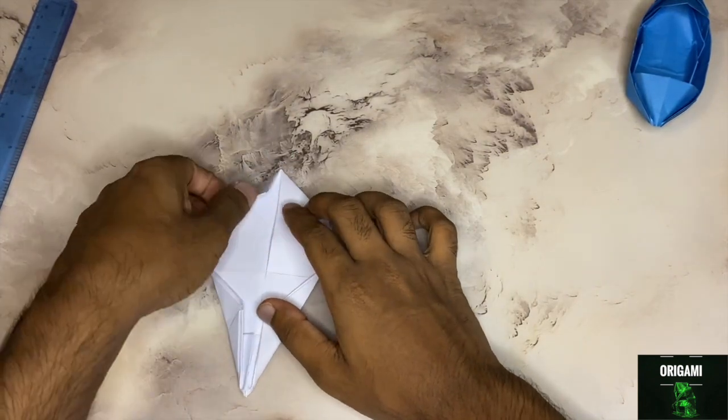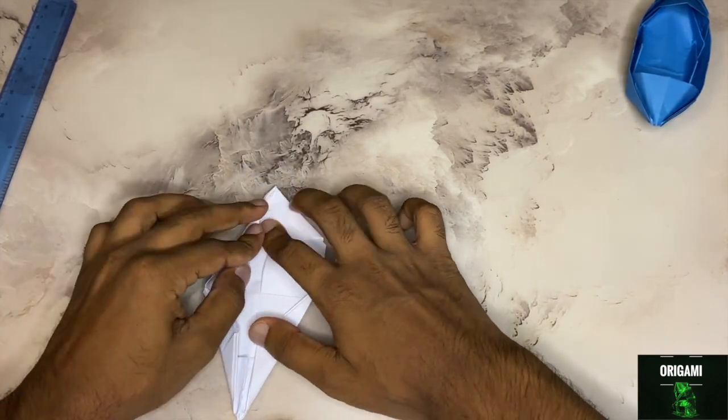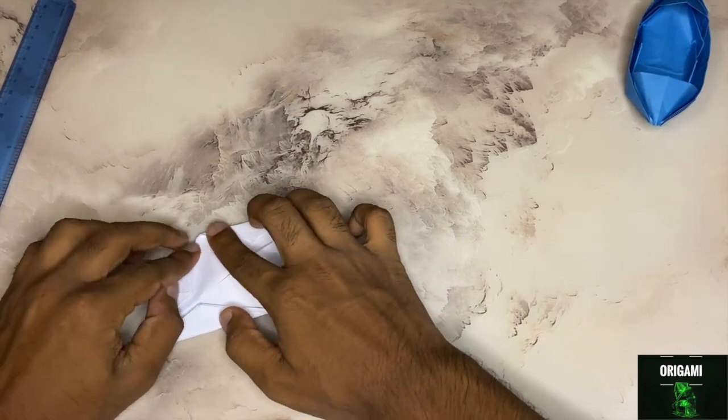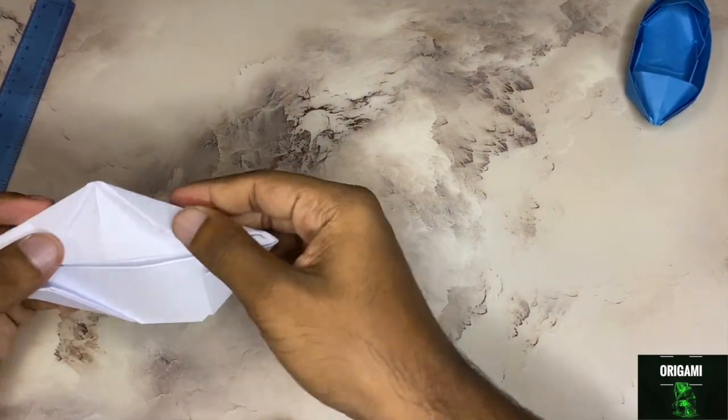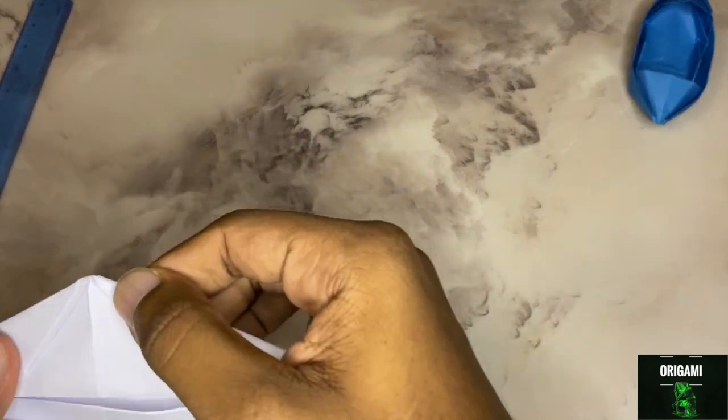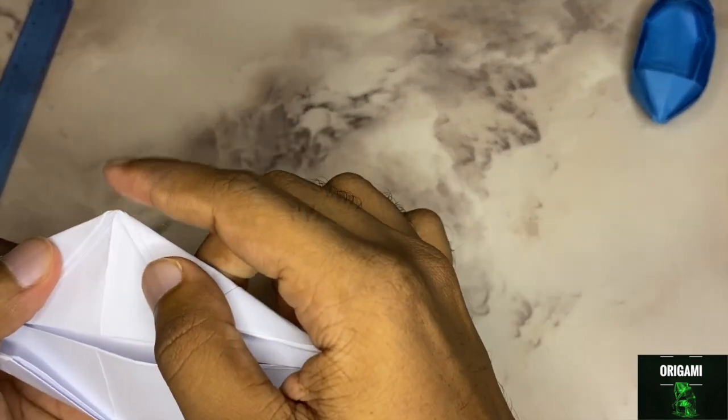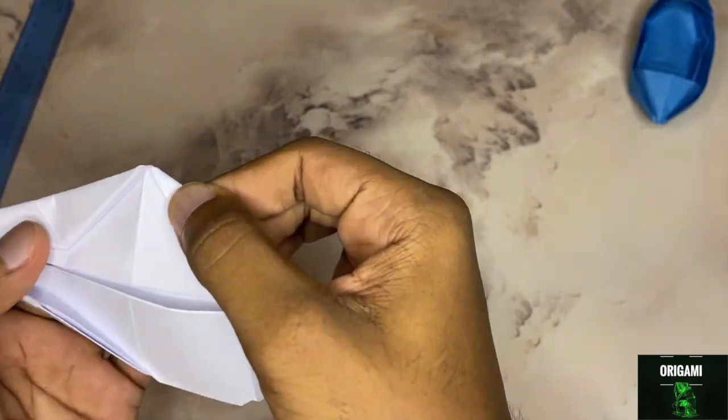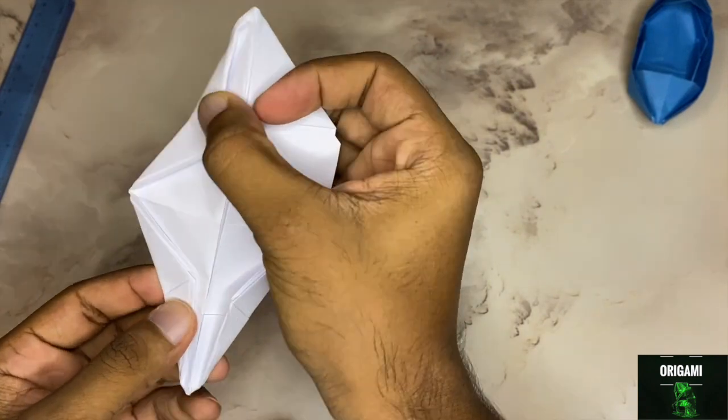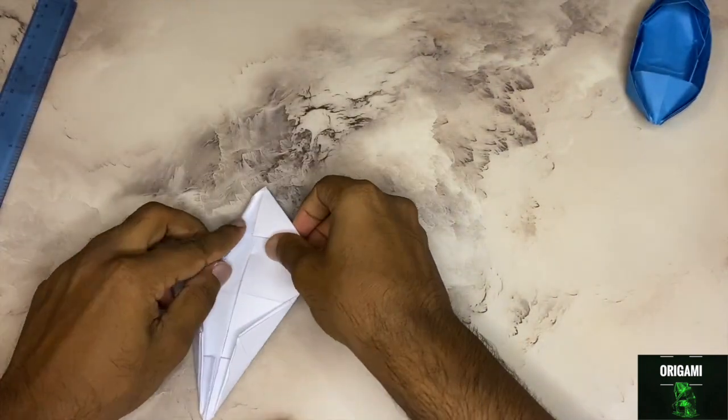Do the same for this side. And make sure this point, these two edges, you know, converge to a single point. You don't want any overlap. So it should look like this. One more side.